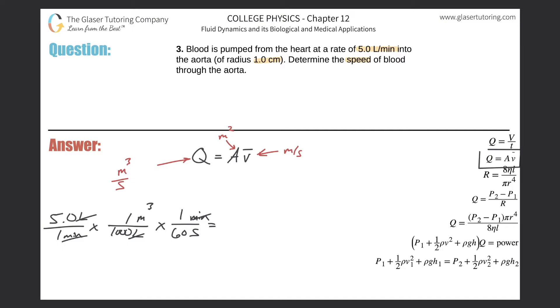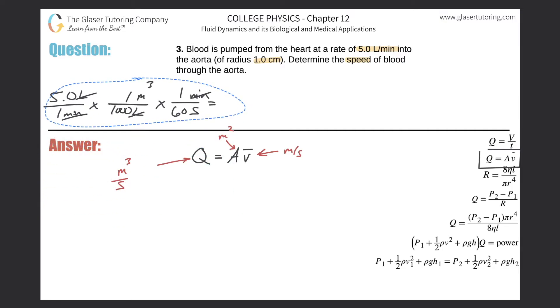I'll move this conversion up to the top. For Q, I'm going to plug in 5.0 divided by 1000 times 60. That's the volume flow rate in cubic meters per second. For the area, they told us the radius, but